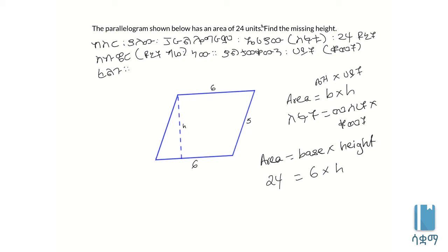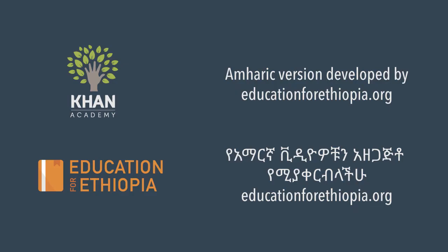Using algebra we can find the height from the formula. The height equals four units. Four units is the answer. So the height of the parallelogram is four units.